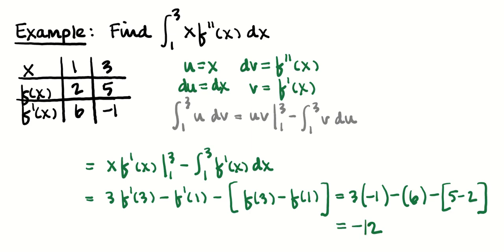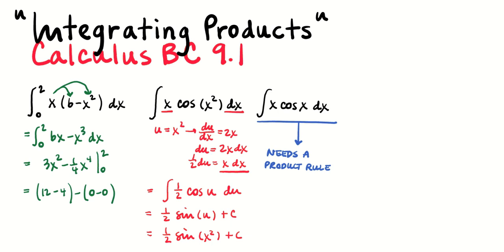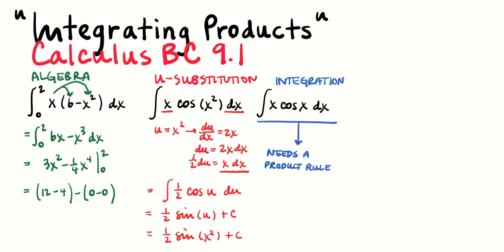That's how we compute a definite integral using integration by parts. For the homework, you'll see a lot of u-substitution and a lot of algebra before anti-differentiation. We need to be able to integrate products using u-substitution, algebra to simplify the integrand before anti-differentiating, and integration by parts. These in tandem will allow us to integrate all the products we need for AP Calculus. Thanks for watching.